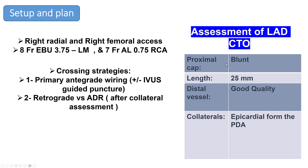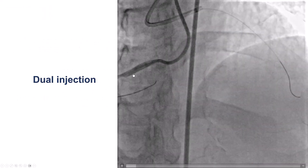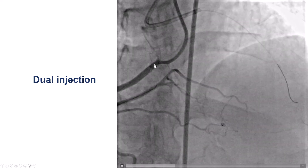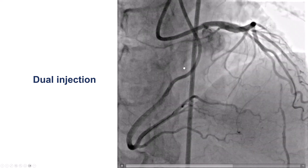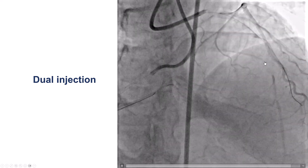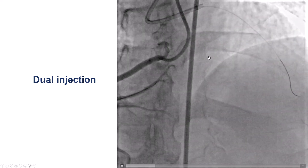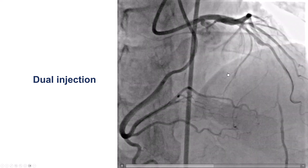So how to approach this lesion? We know that we have a blunt cap, we have good quality distal vessel, the collaterals seem to be epicardial, so we decided to go with dual access using the radial and femoral, with plans for antegrade crossing, potentially using IVUS to guide our puncture, and retrograde or ADR only if the antegrade crossing failed. This is the diagnostic angiogram with dual injection. The remaining vessels look fairly good, so it's very interesting that the patient had isolated disease in the LAD. We have the CTO of the proximal LAD right at the takeoff of the diagonal branch.